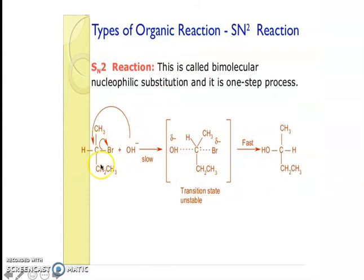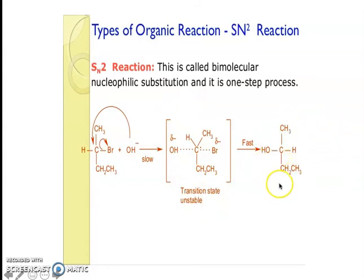For example, with a substrate where bromide is the leaving group, OH⁻ as the nucleophile always attacks from the back side because the leaving group is still attached at the front. The transition state forms first, then breaks to give the final product with the nucleophile attached at the back side. This is called substitution nucleophilic bimolecular because the rate of reaction depends on the concentration of both the nucleophile and the substrate.